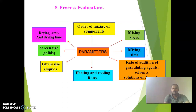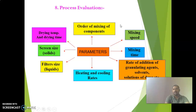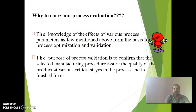Process evaluation parameters in the pilot plant include: order of mixing of components, mixing speeds, mixing time, rate of addition of granulating agent or solvent solutions, heating and cooling rates, filter size for liquids, screen size for solids, and drying temperature. Knowledge of these process parameters forms the basis for process optimization and validation, confirming that the selected manufacturing procedure assures product quality at various critical stages and in finished form.